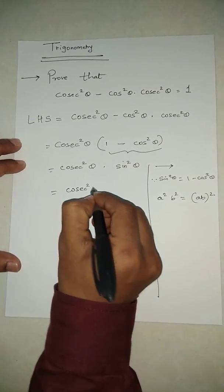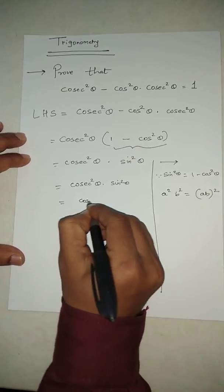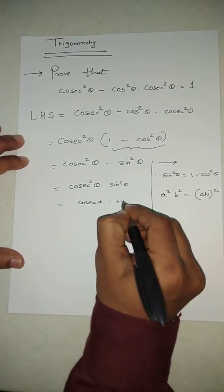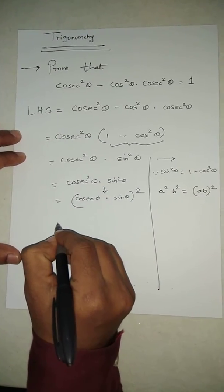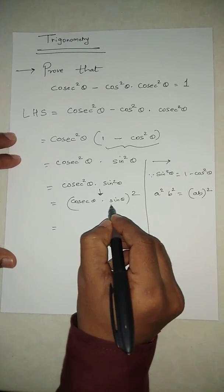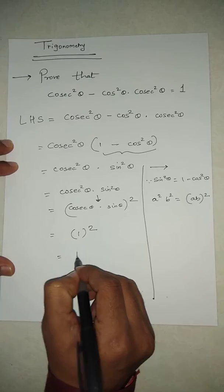And at the end, cosec θ · sin θ, we know that it is 1. So 1² equals 1.